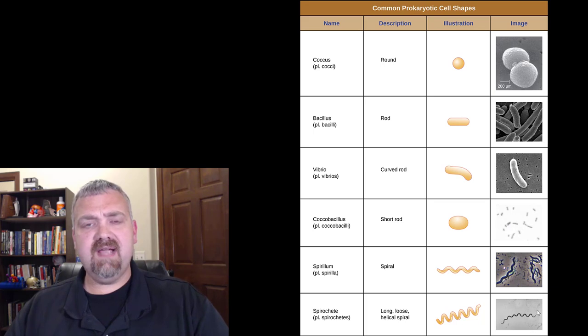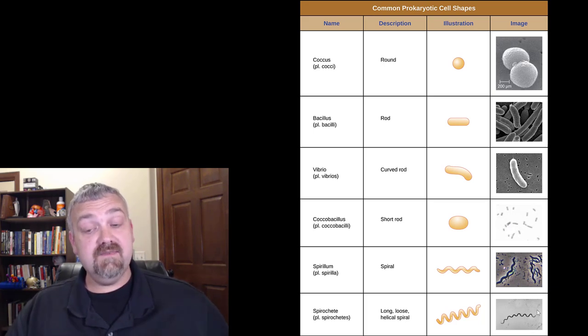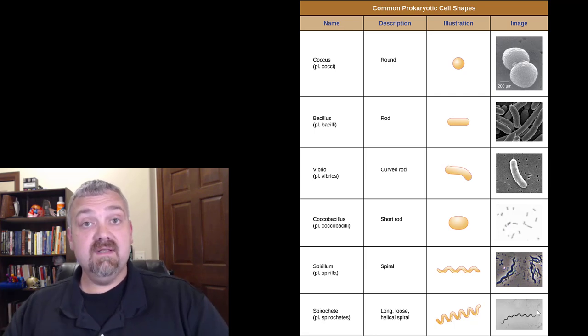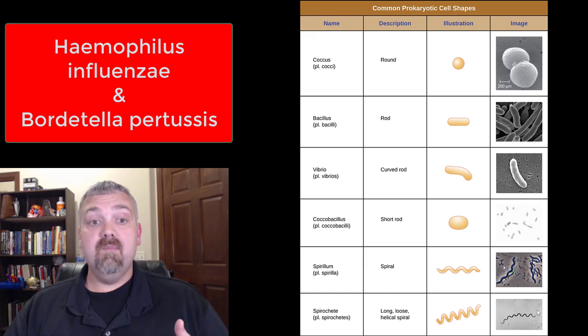Next we have the coccobacillus. These are actually short rods, but they're so short that they can look like spheres, so they can be misinterpreted sometimes. A coccobacillus is a short rod. Quite a few examples here. Important ones, let's see. Haemophilus influenzae, which can cause meningitis. Bordetella pertussis, which causes whooping cough. Those would both be examples of coccobacillus or coccobacilli organisms.